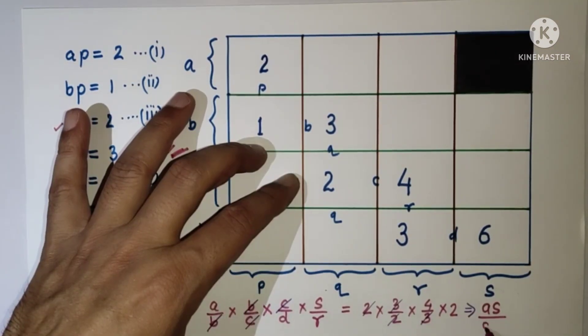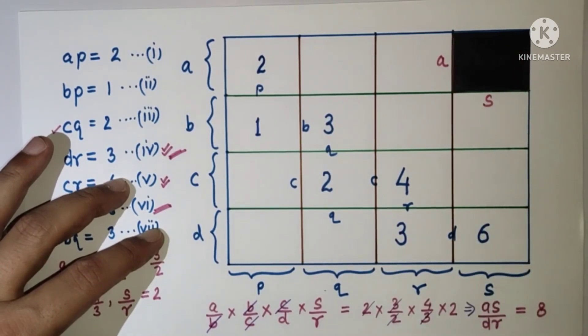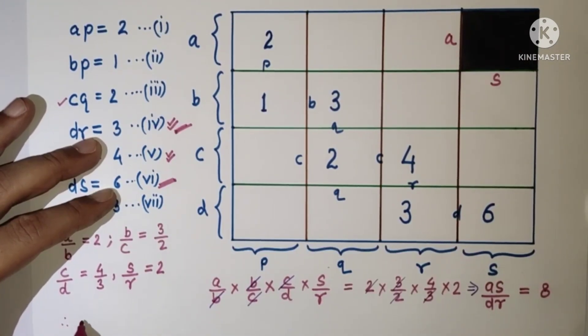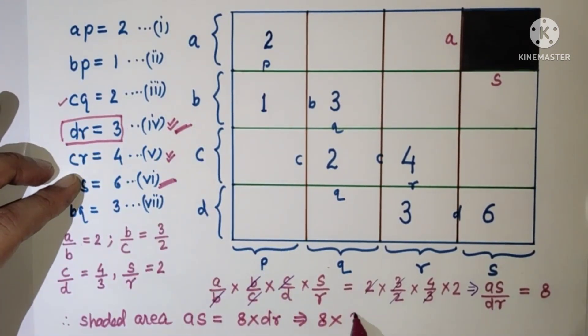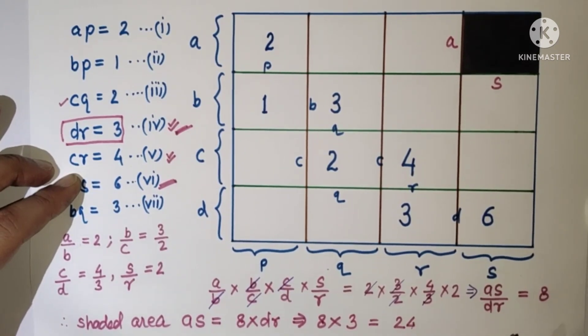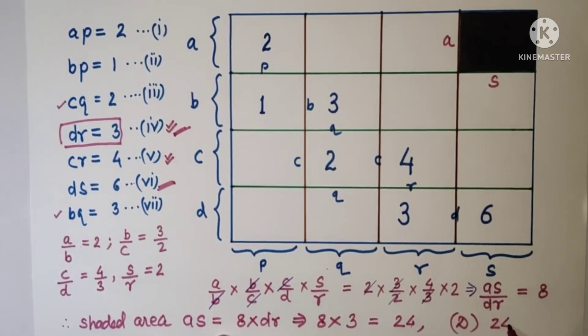So AS upon DR is equal to 4 times 2 is 8. This A and this S, so AS is the required area. Therefore, shaded area AS is equal to 8 times DR. DR is equal to 3, so this is 24 square units. Hence, D is the correct option. 24 is the correct answer.